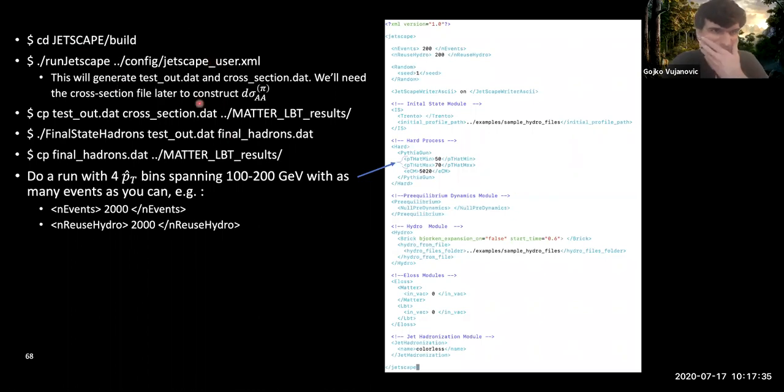These are the instructions: we're going to go into the build directory and then once we edit the xml file we're just going to run jetscape and specify the configuration file as usual as you've seen on many other lectures. This is going to generate two files: test.out, the usual test.out that we've seen before, and cross_section.dat file. This cross section really contains the cross section associated with this pt-hat.